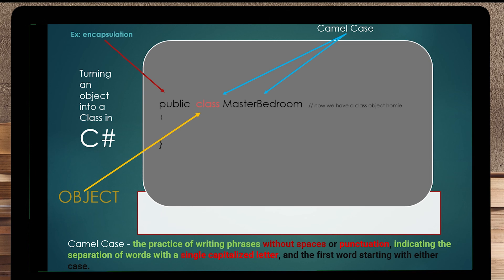Brackets are where all code goes. I remember when I was learning to code, I used to leave brackets out — of course it didn't compile. Most new students will always leave out brackets because it's not normal to throw everything in brackets. But in code, you have to have brackets.